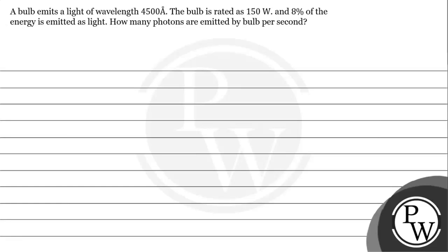Let's read the given question. A bulb emits light of wavelength 4500 angstrom. The bulb is rated at 150 watt and 8% of the energy is emitted as light. How many photons are emitted by the bulb per second? To understand this question we need to understand the key concept of photon energy associated with photons.